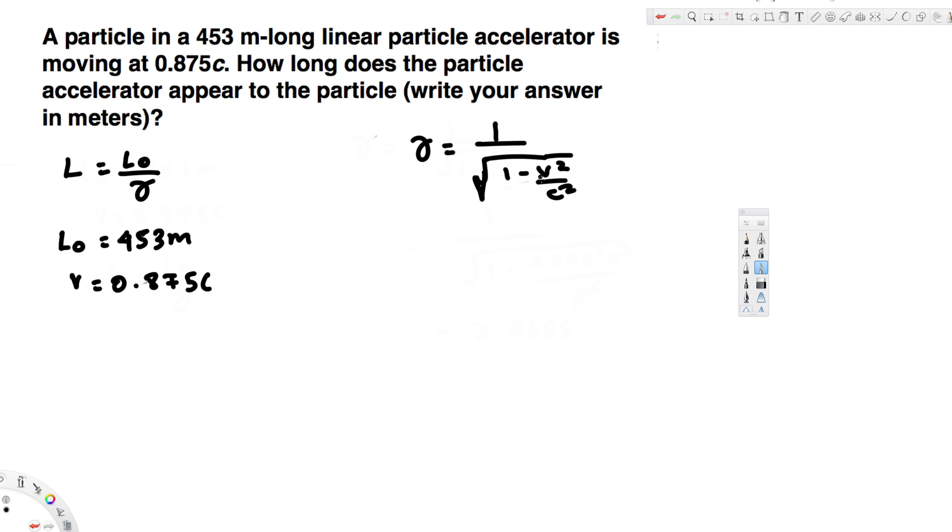Since we have the v value, we can find this one. So this is going to be 1 over the square root of 1 minus 0.875 squared c squared divided by c squared. From this one we can see c squared cancels.